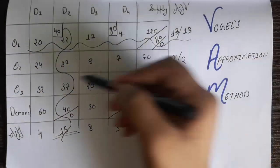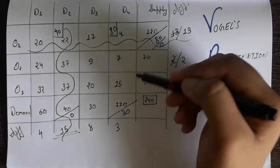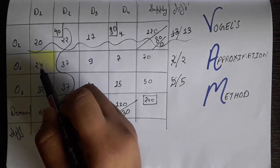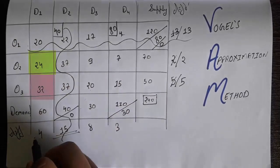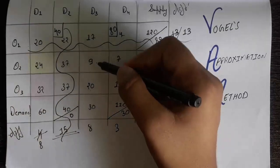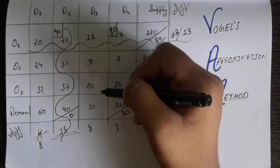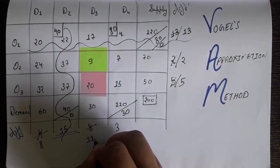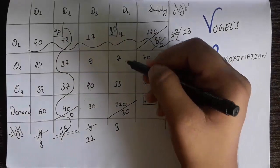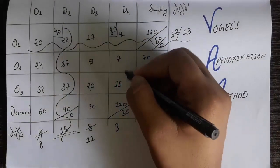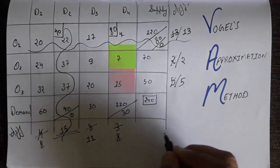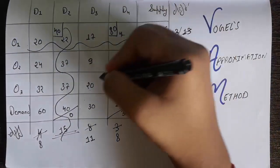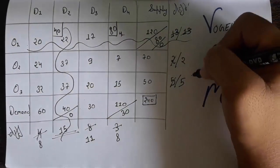Because row O1 was removed, we recalculate the column differences. In D1, the remaining values are 24 and 32; the difference is 32 minus 24 equals 8. In D3, the remaining values are 9 and 20; the difference is 20 minus 9 equals 11. In D4, the remaining values are 15 and 7; the difference is 15 minus 7 equals 8. The differences for rows O2 and O3 remain unchanged.